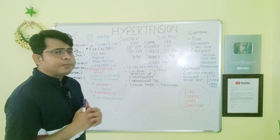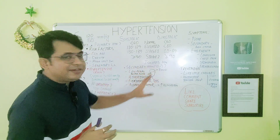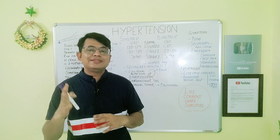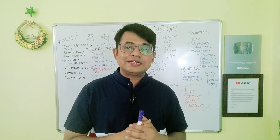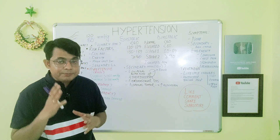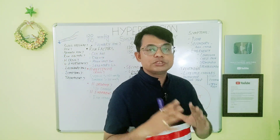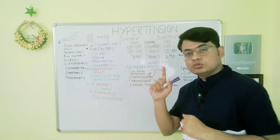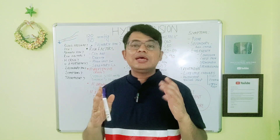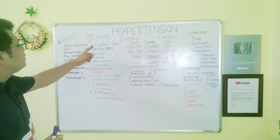Secondary hypertension is seen in about 10 percent of hypertension cases. This type of hypertension is associated with some secondary causes — meaning the hypertension is due to some other identifiable condition — and it is known as secondary hypertension.